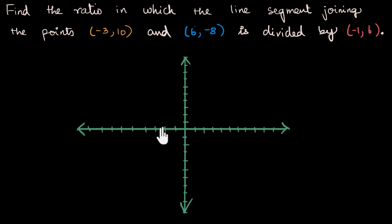Marking the axes: -1, -2, -3 and 1, 2, 3, 4, 5, 6, 7, 8, 9, 10. This is where approximately my (-3, 10) is. Let's just mark that (-3, 10).